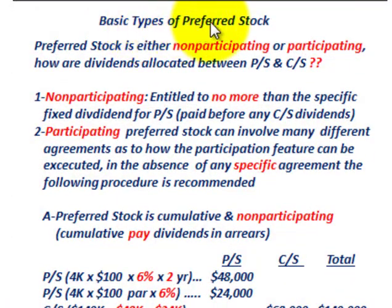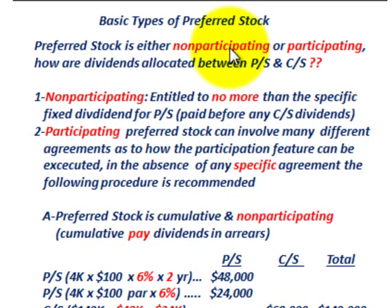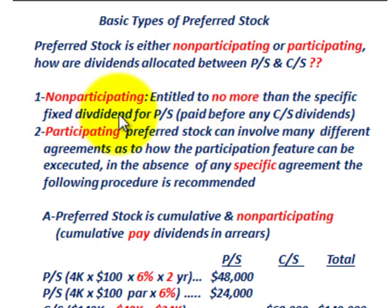We have two basic types of preferred stock: non-participating and participating. For non-participating preferred stock, it's entitled to no more than the specific fixed dividend stated on the preferred stock, and it has to be paid before any common stock dividends are paid.